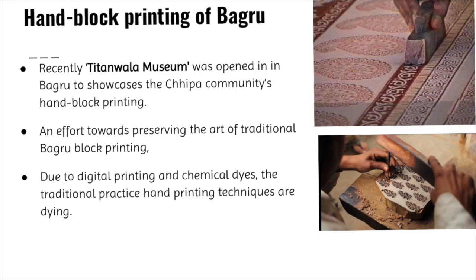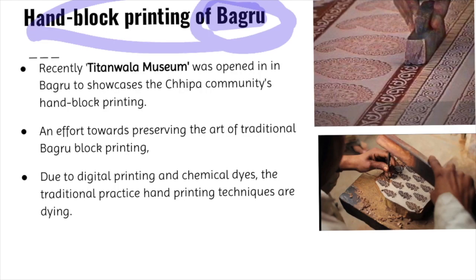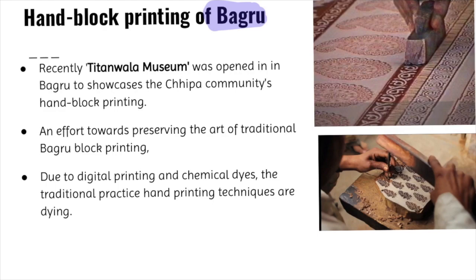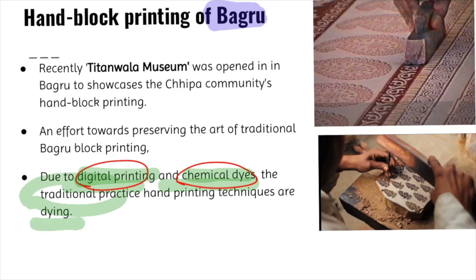Next is hand block printing of Bagru. Bagru is a small village near Jaipur, not famous for any fort, museum, or palace, but for keeping alive a three-century-old tradition of hand block printing. Due to digital printing and chemical dyes, traditional art practices are dying — so to preserve this art, recently the Teetanwala Museum was opened in Bagru.